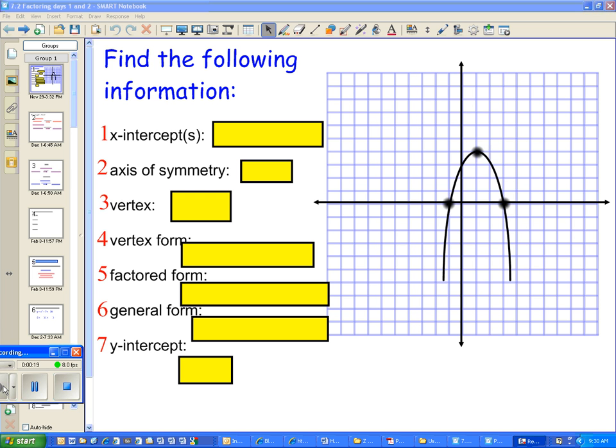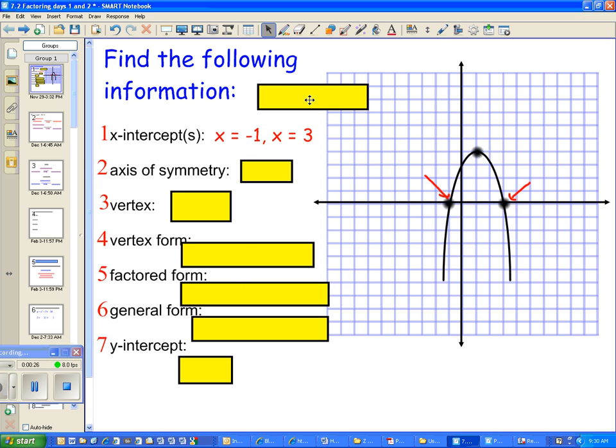Okay, the x-intercepts, well, they're right here, and so it shouldn't be too hard to find them. Negative 1 and 3, raise your hand if you had those right. Okay, good.